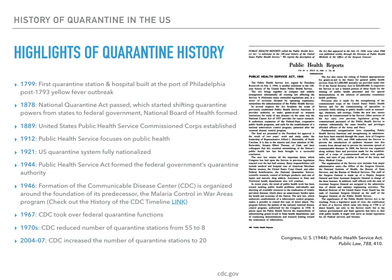In 1946, the CDC — then known as the National Communicable Disease Center — was formed with a primary mission to prevent malaria from spreading across the U.S. Check out the link to the CDC timeline to track its modest beginning to becoming the nation's premier health promotion, prevention, and preparedness agency. In 1967, the CDC took over federal quarantine functions.